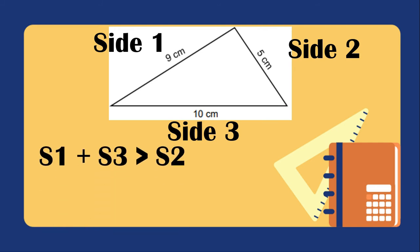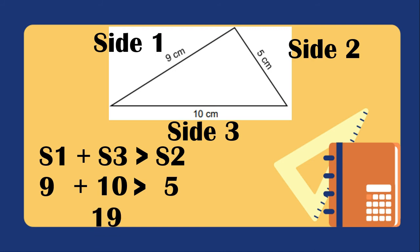For the third combination, we have side 1 plus side 3 greater than side 2. Side 1 is 9, side 3 is 10, and it should be greater than 5. We have 9 plus 10, that is 19, greater than 5. Still, this is correct. Meaning, if you get all yes for all the combinations of sides, the given measurements of the three sides can be used as the lengths of a triangle.